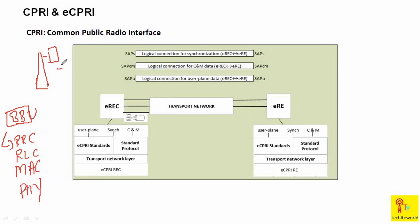Here at the baseband unit, all the protocol layers are present - RLC and others. The physical layer processing happens here, and the RF unit is also there. The RF unit basically consists of an oscillator and is capable of transmitting and receiving electromagnetic signals.